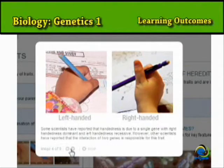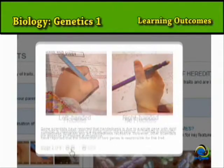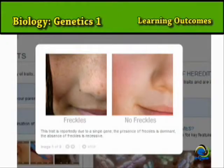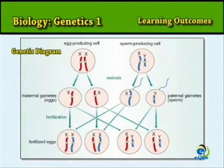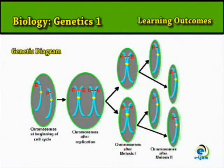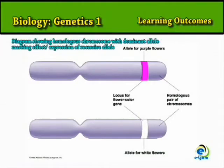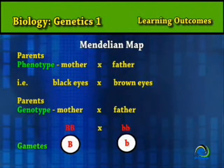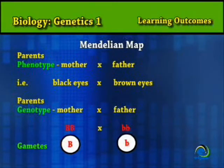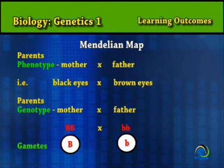The transmission of genotype, and hence phenotype, from one generation to the next can be mapped by using a genetic diagram. Let's use this example to map the transmission of a gene from one generation to the next. In mice, black eyes (B) are dominant to brown eyes (b). How can a black-eyed mouse mate with a brown-eyed mouse and produce only black-eyed mice?